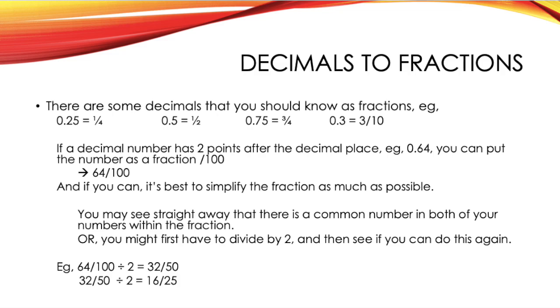Then what you want to do is simplify your fraction as much as you can. So, as I said here, you may see straight away that there is a common number in both your numerator and your denominator. And so, you can simply just divide this common number to get your simplified fraction. However, you may not see a common number straight away. And so, what you can do, as long as both the numbers are even, is first divide by 2 and see how much further you can do this. So, for example, for the number 64 over 100, you'd first divide this by 2 to get 32 over 50, and then you can divide this by 2 again to get 16 over 25.